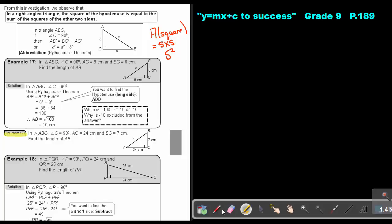As soon as you are finished, you can continue with the video. Let's start. Try Now 70.17. In triangle ABC, angle C is 90, AC is 24, BC is 7. Find the length of AB. So start by saying in triangle ABC, angle C is 90. So we are going to use Pythagoras theorem.